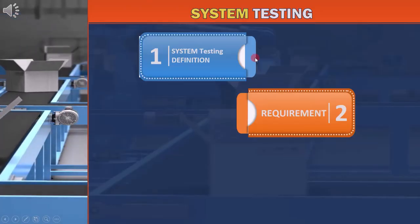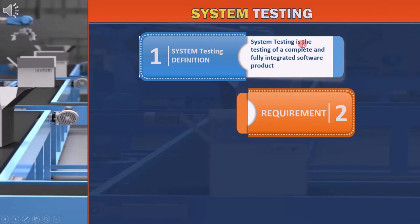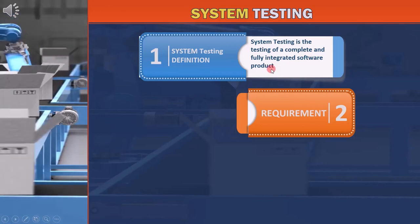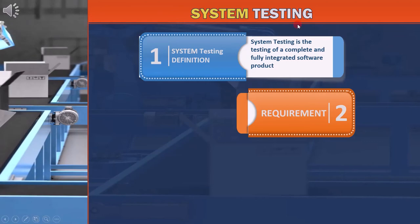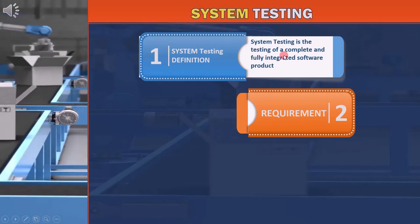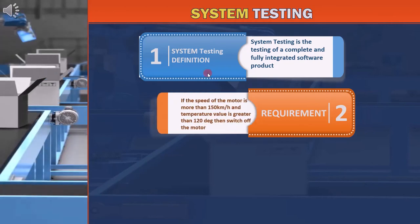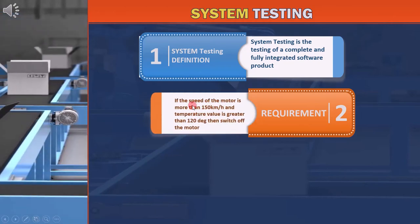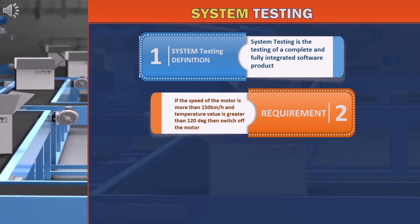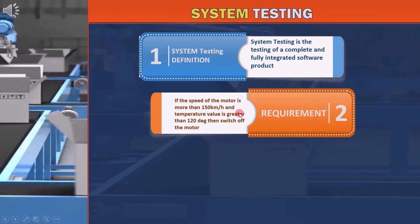Let's start with the system testing definition. System testing is the testing of a complete and fully integrated software product. The key phrase here is 'complete and fully integrated,' which means that integration testing has been done and all components are fully integrated. Let's use an example to illustrate this concept.